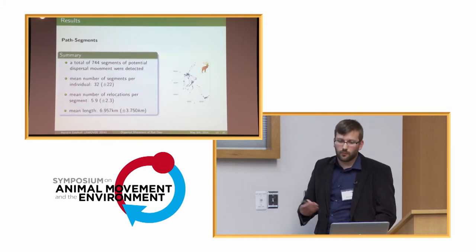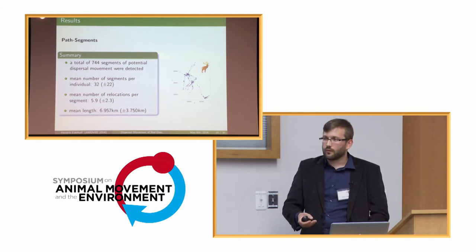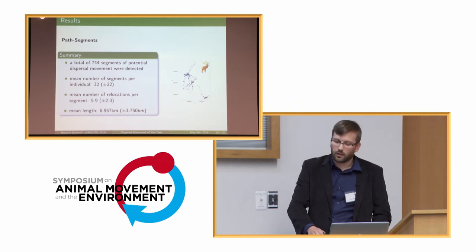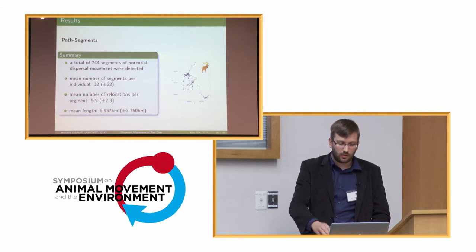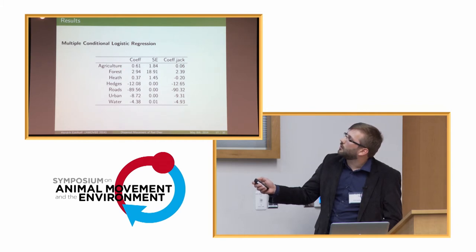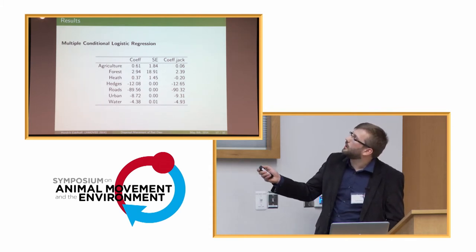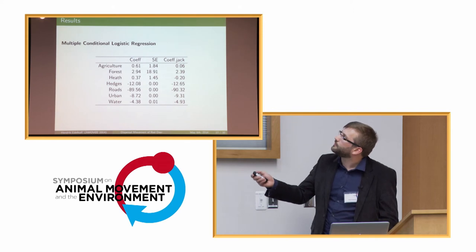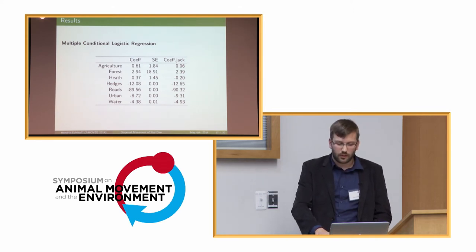In total, applying the BCPA yielded 744 segments of potentially dispersal movement — around 32 per animal, though highly variable — with a mean of six steps per segment and a mean segment length of around seven kilometers. The conditional logistic regression showed that agricultural landscapes and forested areas had a positive influence on path selection, while hedgerows had a negative effect, and other variables including roads and urban areas had negative effects with varying degrees.